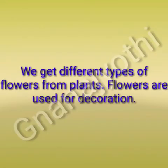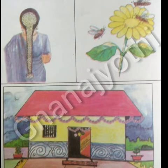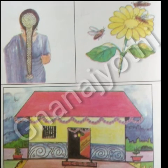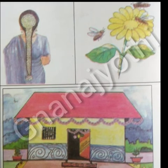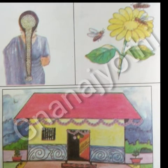We get different types of flowers from plants. Flowers are used for decoration. Observe these pictures, children — flowers are used for girls too. Honey bees collect the nectar from flowers and we use flowers to decorate our houses.